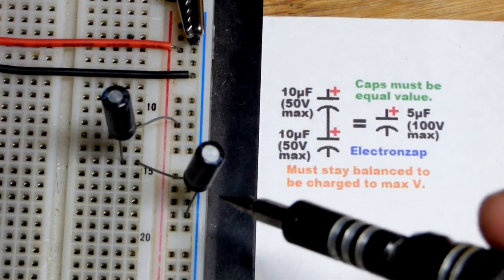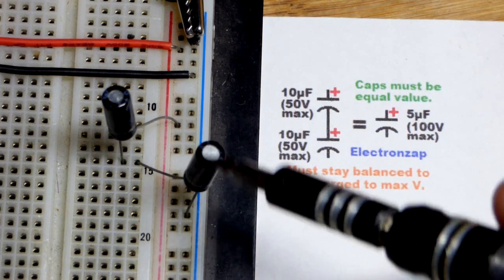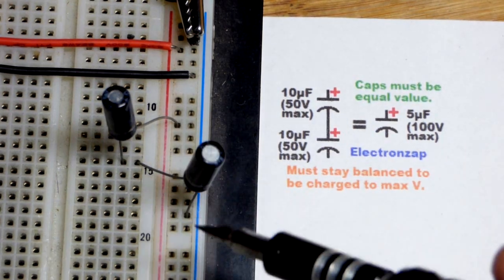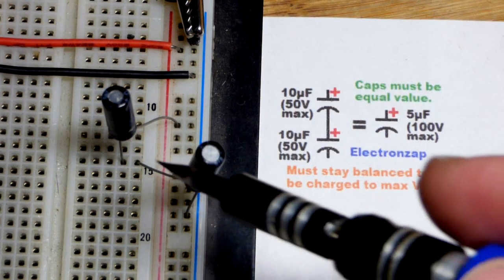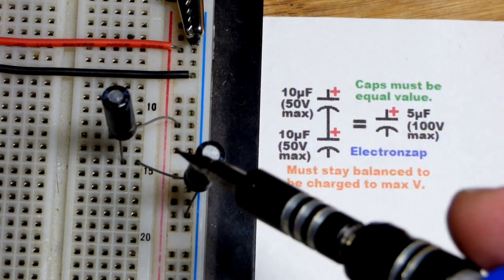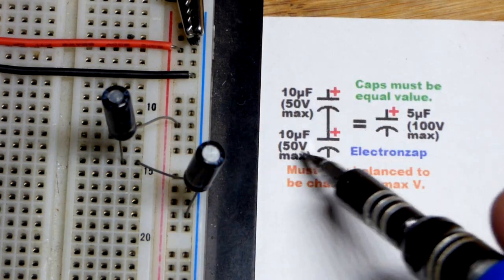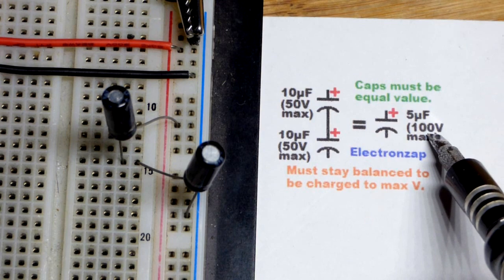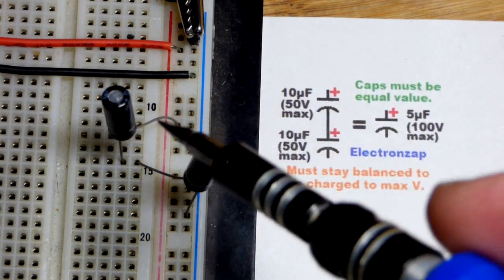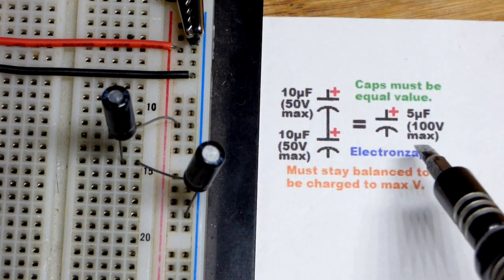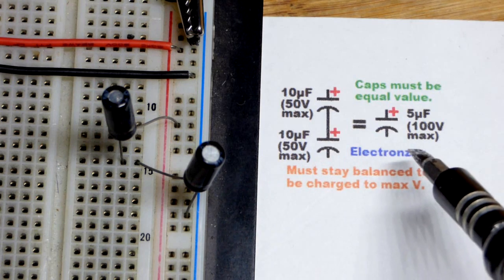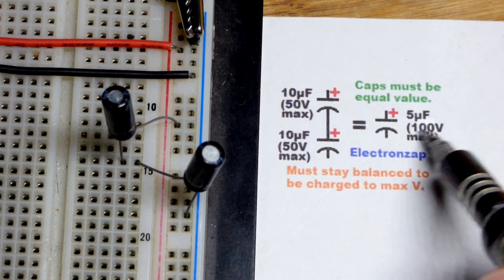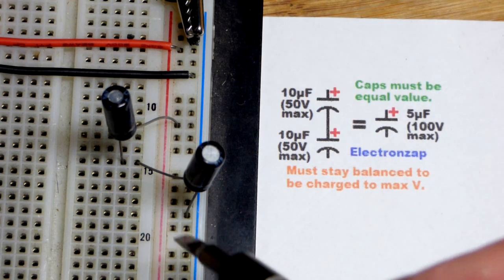As we saw before, when we put 5 volts across them, if they were perfectly balanced they both would have had 2.5 volts across them. So each one of them is only getting half of the total voltage. We could in theory charge them both up to 100 volts and they'd be perfectly fine. You won't want to touch that, you'd get shocked, but we could charge them up to 100 volts.